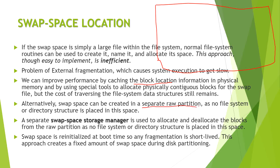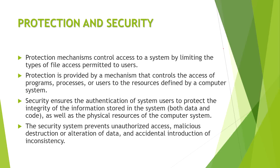Alternatively, swap space can be created in a separate raw partition — an empty area of the disk where nothing is stored. A swap space storage manager is used to allocate and de-allocate blocks. Since swap space is volatile, it is re-initialized at boot time, so any fragmentation is short-lived and will be erased as soon as the system boots.